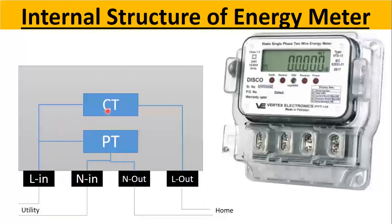Now let's see the internal structure. So internally we have one CT. CT is the abbreviation for current transformer and it is measuring the current.